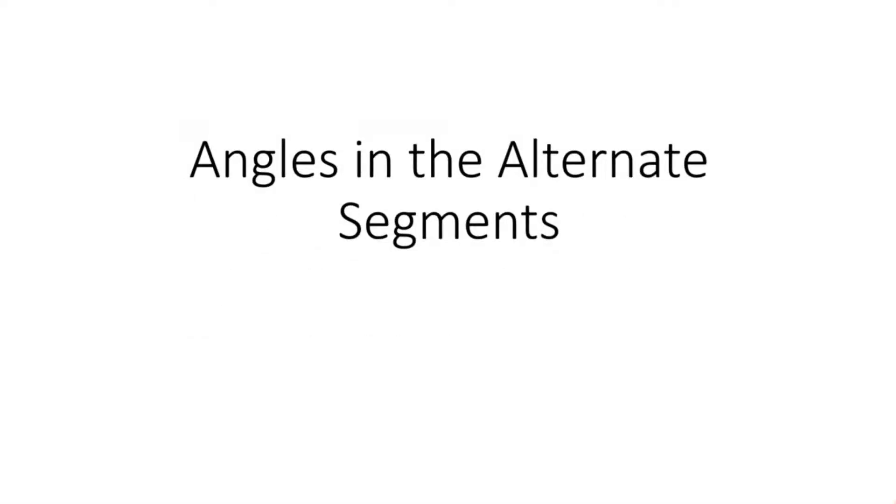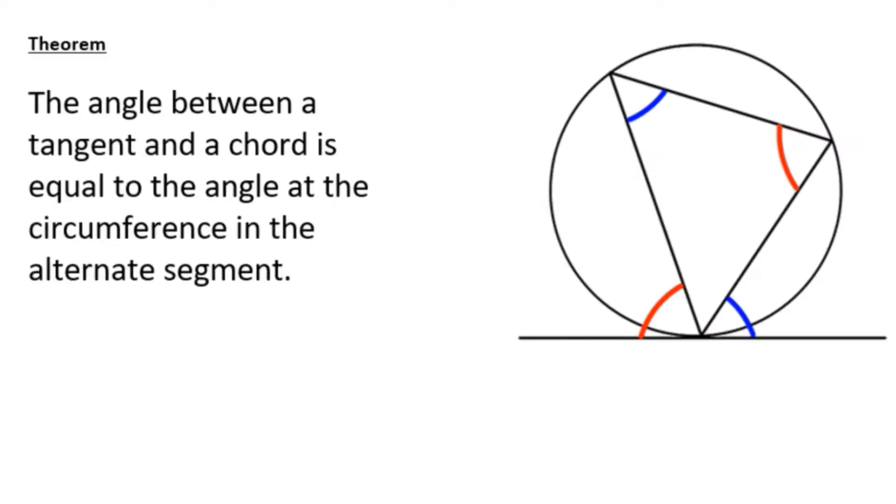In this video, I'm going to be talking about the final circle theorem, and one that I think is often the hardest to spot in a question: the angles in alternate segments, often called the alternate segment theorem. Specifically, this is the theorem that says the angle between a tangent and a chord is equal to the angle at the circumference in the alternate segment.